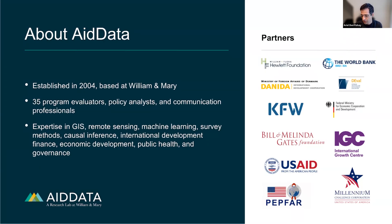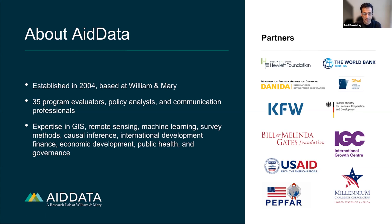We have a professional staff of about 35 folks, which is a mix of program evaluators and policy analysts, geospatial folks, and more. Our team that you're going to be interacting with this week has particular expertise in GIS, remote sensing, and causal inference. As you can see, we've partnered with lots of different folks over the years.